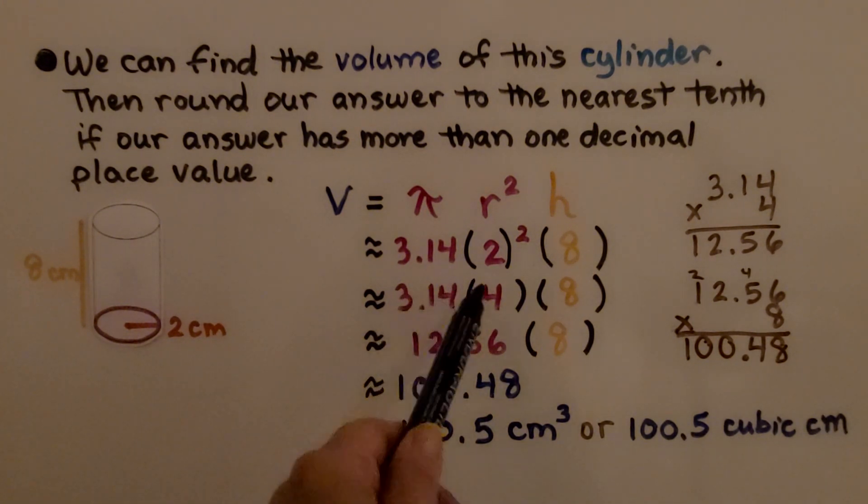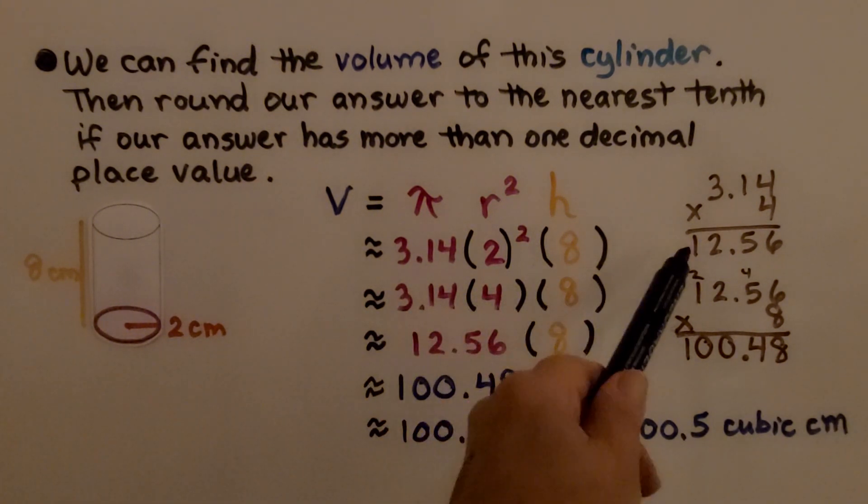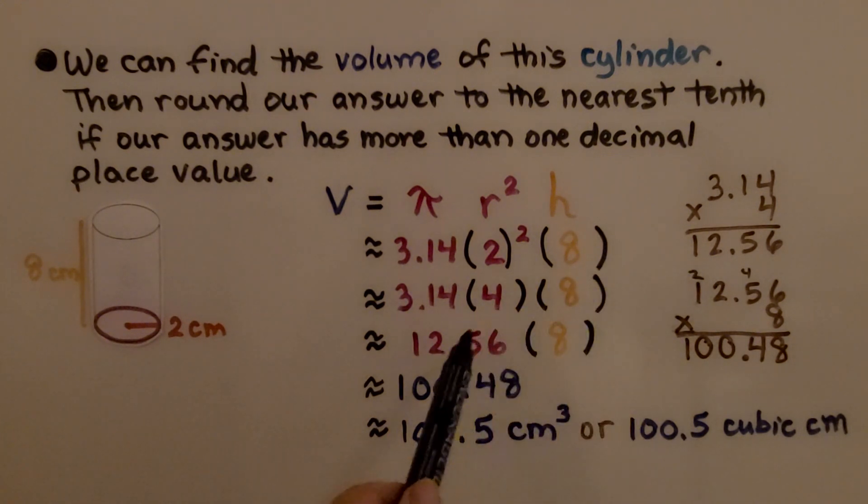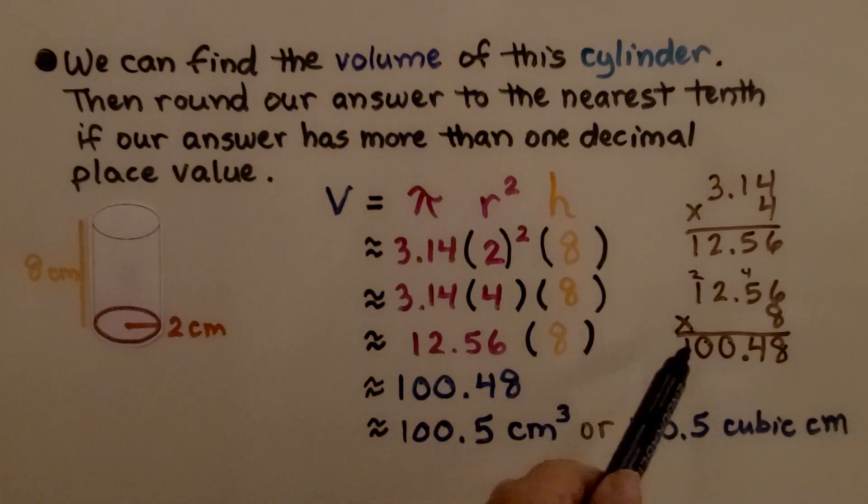We multiply the 3.14 times 4. We get 12.56. We multiply that by 8. We get 148 hundredths.